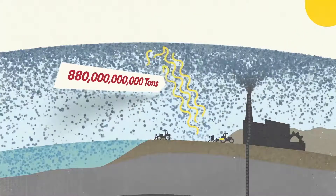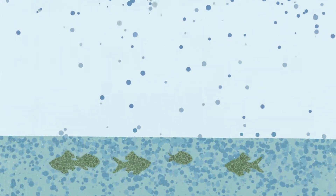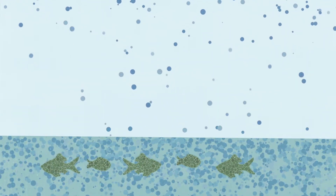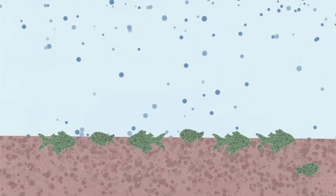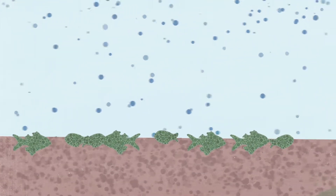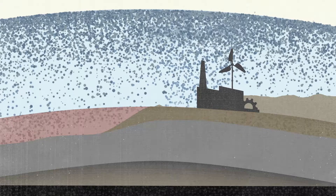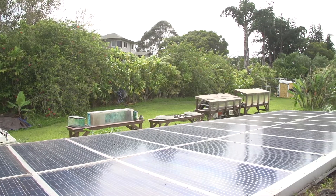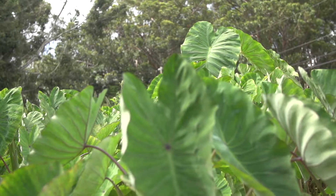Now the oceans have absorbed a lot of this excess carbon, which is resulting in ocean acidification and is accelerating mass extinction of sea life. So in order to save life as we know it, we have to stop releasing fossil carbon. The big question is: where do we put the excess carbon to get the cycle back into balance?